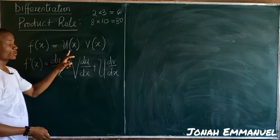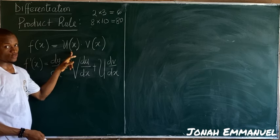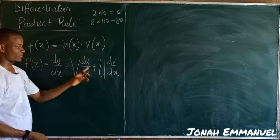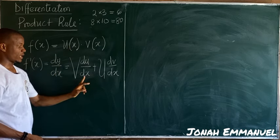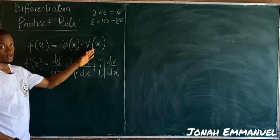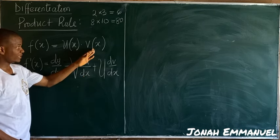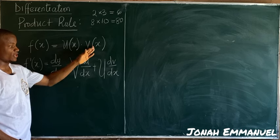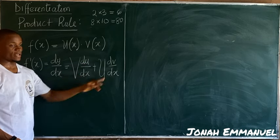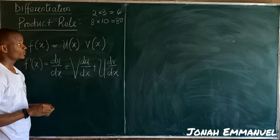The concept is: take the first term and call it u, then differentiate u with respect to x to get du/dx. Take the term on the right, call it v, then differentiate v with respect to x to get dv/dx.